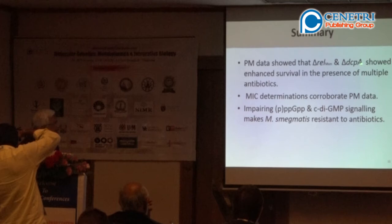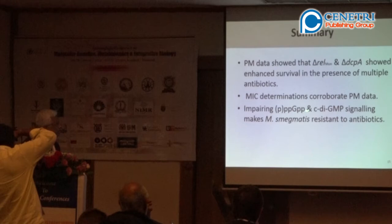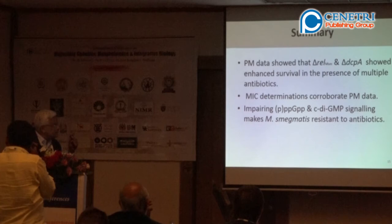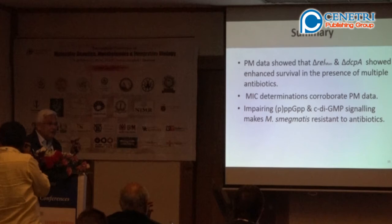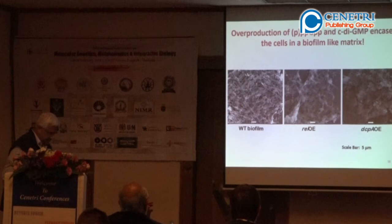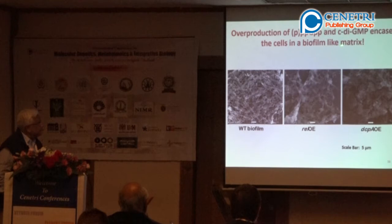In summary, delta-REL and delta-DCPA showed resistance in the presence of multiple antibiotics. Impairing this signaling confers antibiotic resistance. The stringent response (REL/ppGpp synthesis) and cyclic-di-GMP (controlling cell permeation) both affect antibiotic sensitivity through differential gene activity. REL becomes a very important parameter for antibiotic sensitivity.